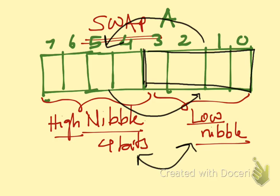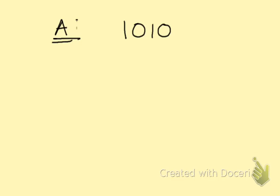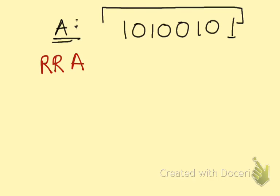Now let's look at some examples. I have the data in A as the binary number 1 0 1 0 0 1 0 1. I'm doing an operation RRA — rotate right of A. All these digits shift one space to the right, and the last one wraps around. So I get 1 1 0 1 0 0 1 0. That is RR of A. And if I do rotate left of A, I get the reverse: the first bit wraps to the end, giving 0 1 0 0 1 0 1 1.